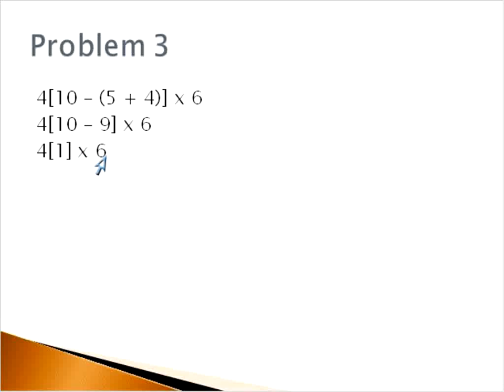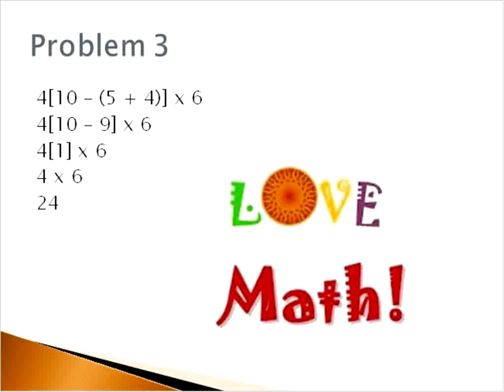4 times 1 times 6. That's what this means when the 4 is right next to the parentheses. 4 times 1 times 6. So 4 times 1 is 4. 4 times 6 is 24. So that would be our final solution for that one.